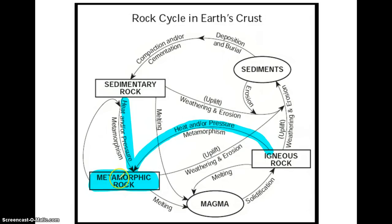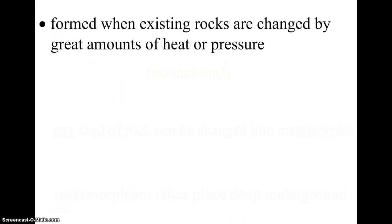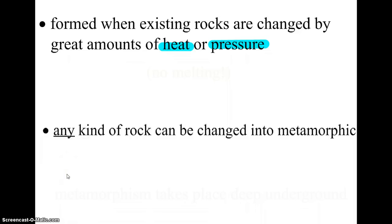And even a metamorphic rock, if it gets buried underground deeper where there's more heat or pressure, even that will turn into a new metamorphic rock. So, metamorphic rocks are formed when existing rocks are changed by great amounts of heat or pressure, and it's important to understand that any kind of rock — sedimentary, igneous, or metamorphic — can become metamorphic.